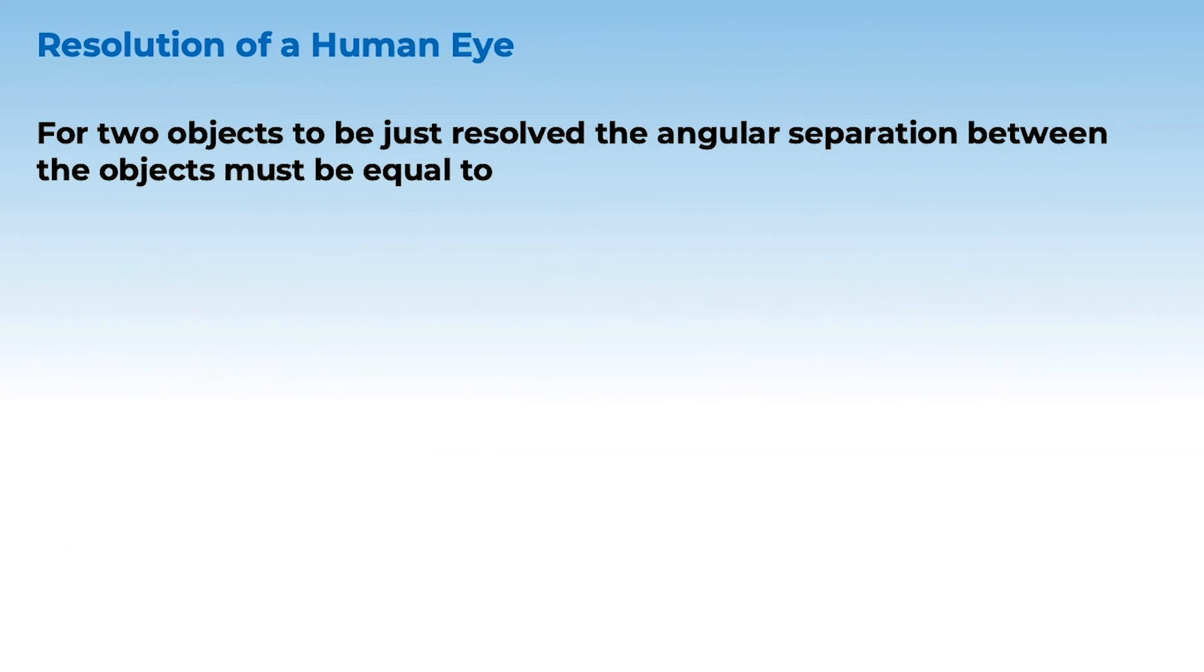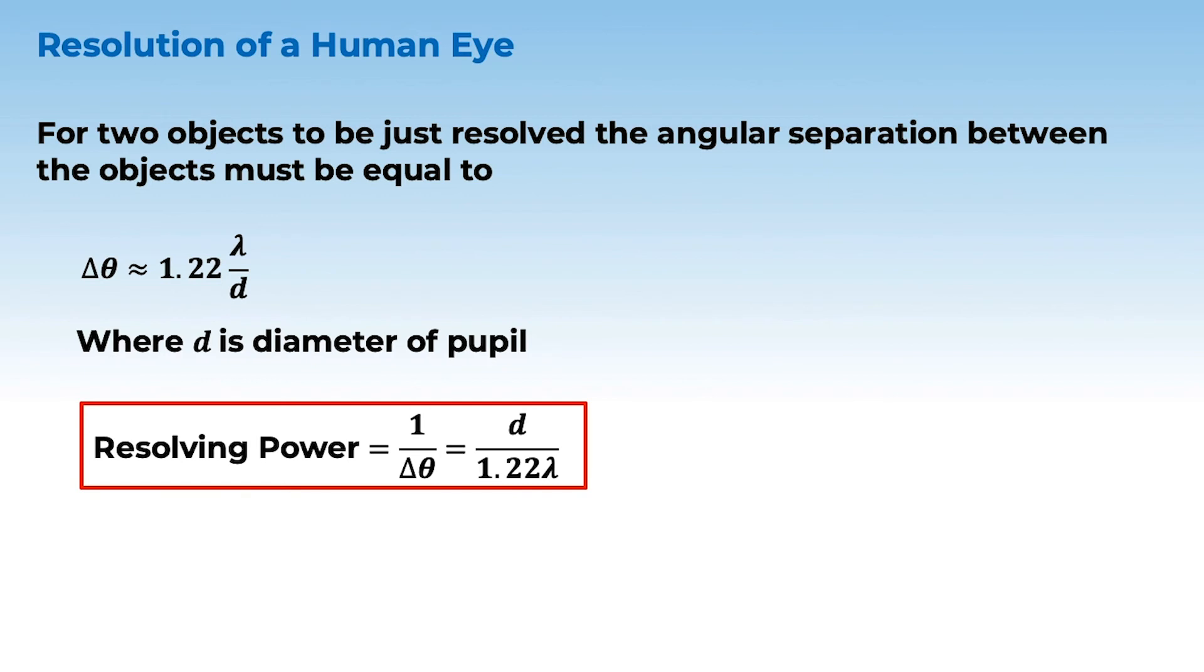Our eye is a lens. For this lens, the definition of angular separation between the two objects is 1.22 lambda by d. Which means, the resolving power is 1 by delta-theta, which is d by 1.22 lambda. Here, d is the pupil diameter. Because our eye lens is the pupil.